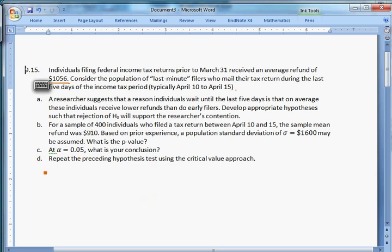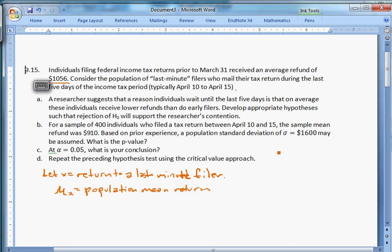What we're going to do is let X equal the return to a last-minute filer. This makes sense, right? This guy's a researcher. He says, well, maybe the reason they're not filing on time is because they're not going to get as much money. People who get money want to rush to get the money, and people who aren't going to get money, they'll take their time. So if we have X as a return to a last-minute filer, we have mu X as the population mean return. And our hypotheses for now, because we're doing one sample population mean, our hypotheses are going to be about the value of mu X.